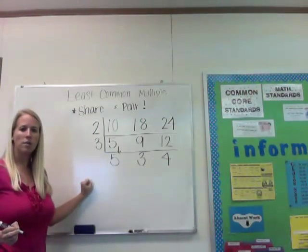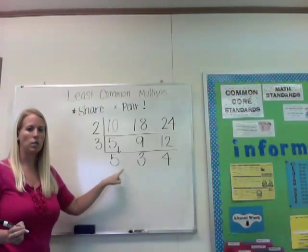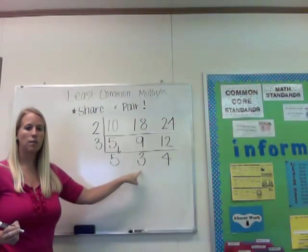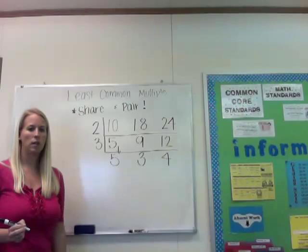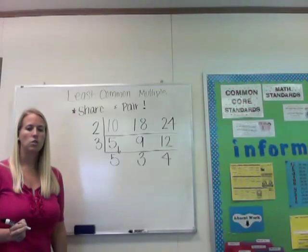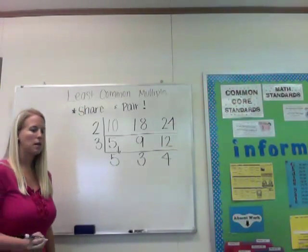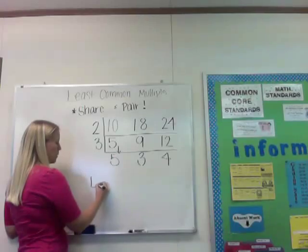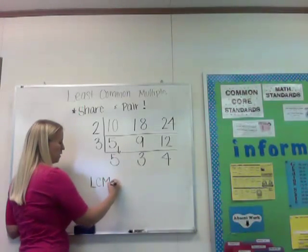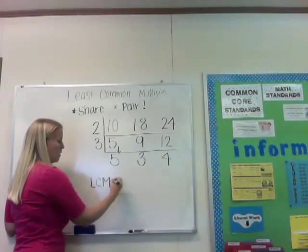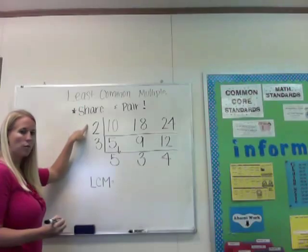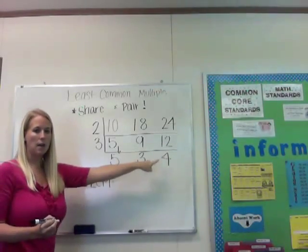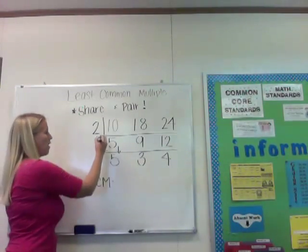Now, are there any prime numbers that can go into 5, 3, and 4? The answer is no, so now I'm done. My least common multiple — remember, I use the number both on the left and at the bottom. It should look like an L.